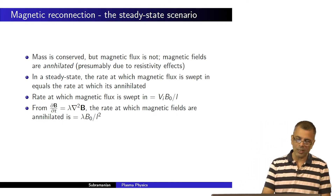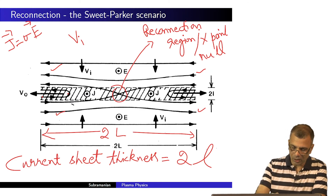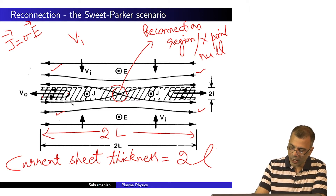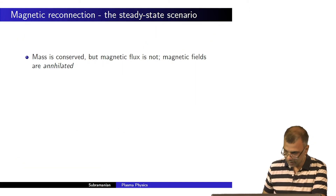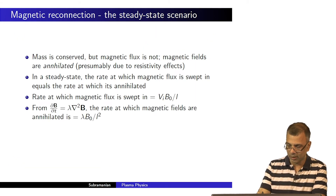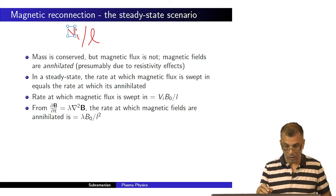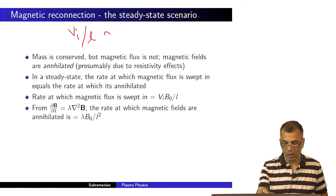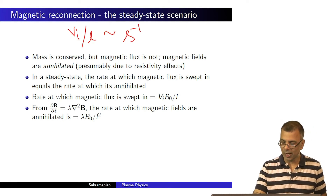What is the rate at which magnetic flux is swept in? V_i is the speed at which the magnetic flux is brought in, and this annihilation is happening over the thickness of the current sheet, 2L. Therefore the rate would be V_i over L — the dimensions of V_i over L would be per second, giving you Gauss per second.